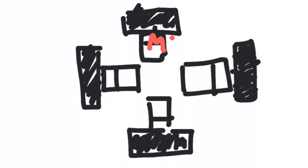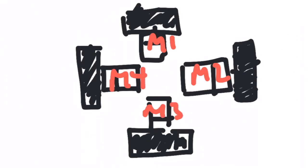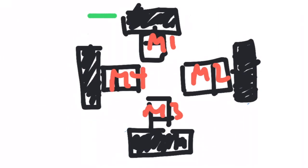For a robot to spin, all the motors need to move in the same clockwise direction. So if they go clockwise, they all move in that direction. And for it to spin in the opposite direction, all the wheels must move in a counterclockwise direction.